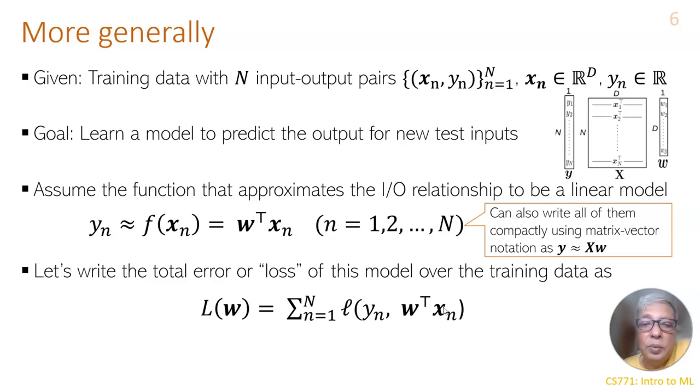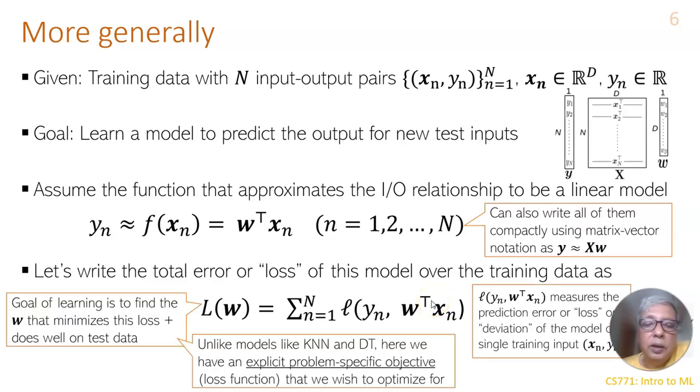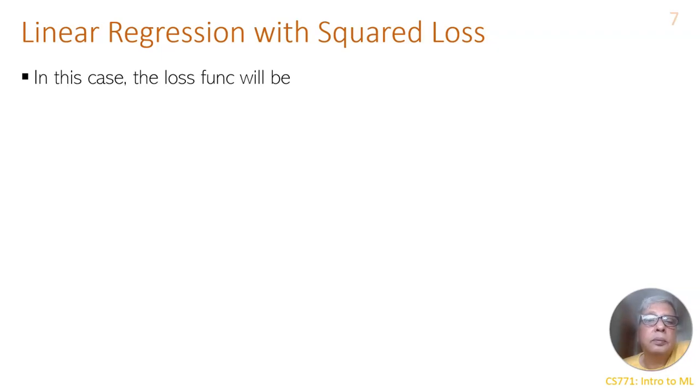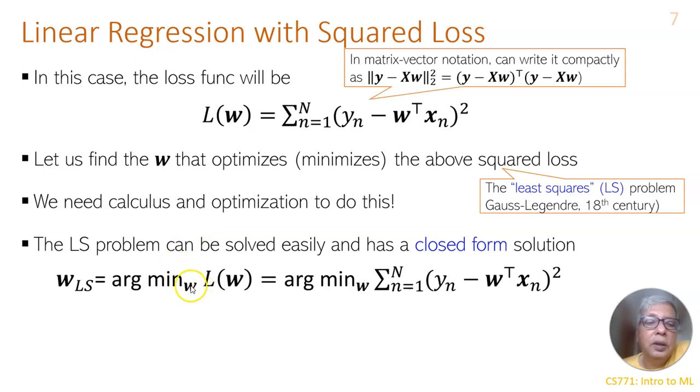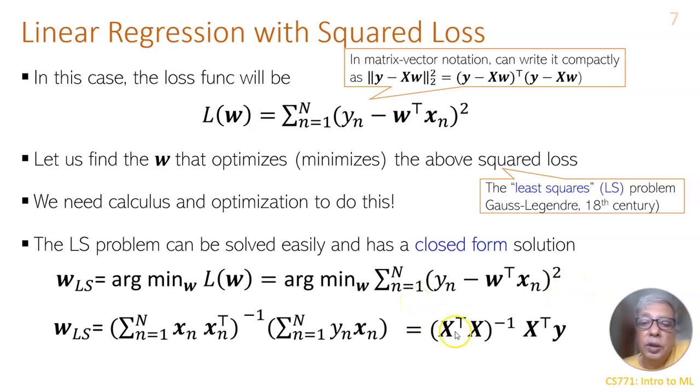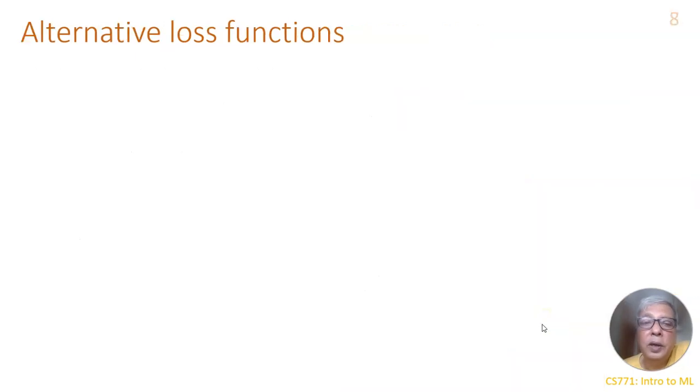This could be the absolute deviation, etc. So if we take the squared error loss, yn minus w transpose xn whole squared, summation, then the best estimate of the weights would be the arg min that minimizes the squared error loss. This is called the normal equation and the relation turns out to be x transpose x inverse x transpose y. So that is the best fitted line or the best fitted plane to the data.